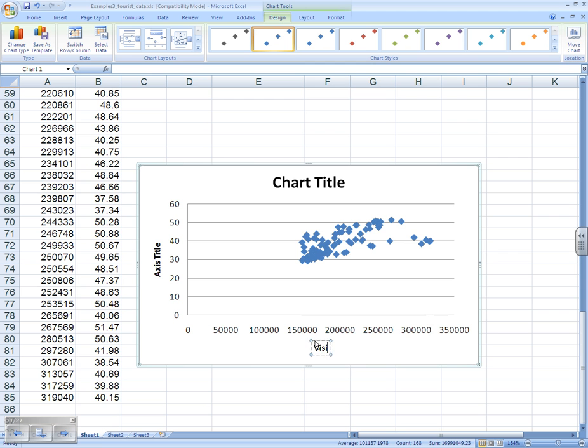Then on the X, we will have visitor arrivals per month. That's our predictor. And using our predictor to predict our Y value, our occupancy rate average per month. So using our model to predict the occupancy rate.